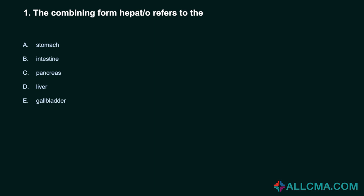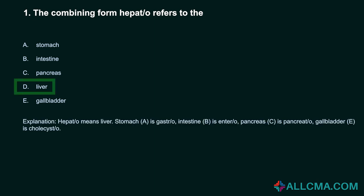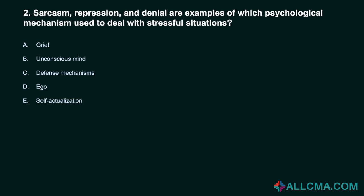Question 1: The combining form hepat/o refers to the: a) stomach, b) intestine, c) pancreas, d) liver, e) gallbladder. Correct answer: D, liver. Hepat/o means liver. Stomach is gastro/o, intestine is enter/o, pancreas is pancreat/o, gallbladder is cholecyst/o.